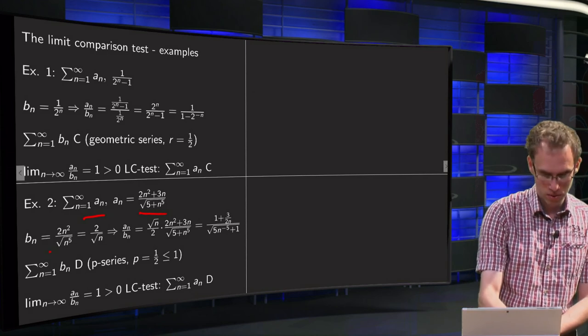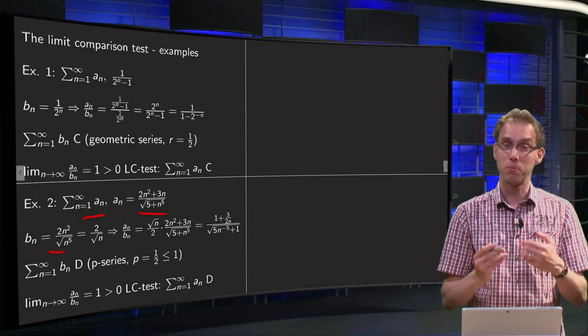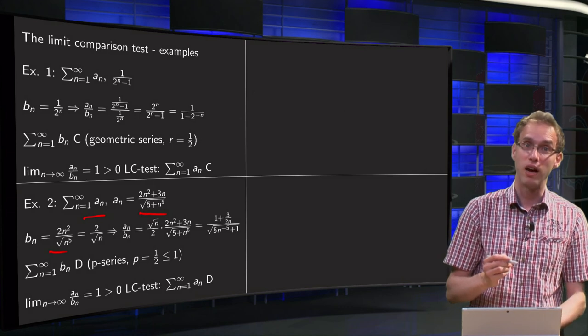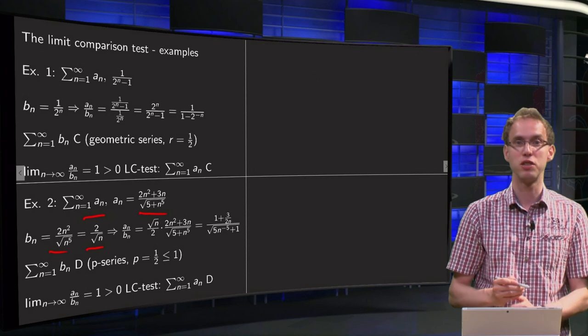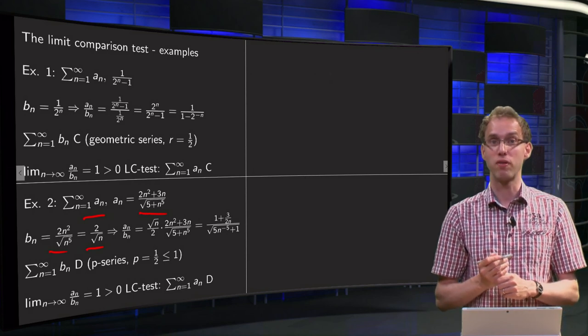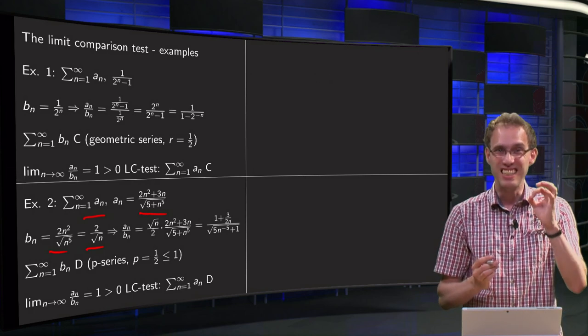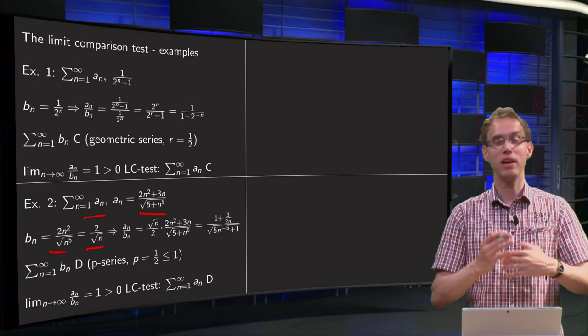So we get bn. We will take bn as 2n squared divided by the square root of n to the power 5, or the n to the power 5 over 2, which simplifies to 2 divided by the square root of n. That will be the idea for our bn. Well, let's see whether it works.